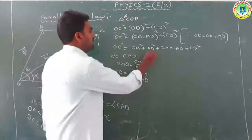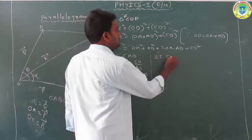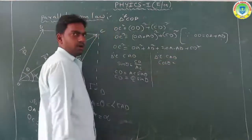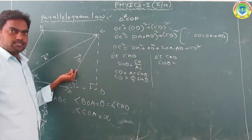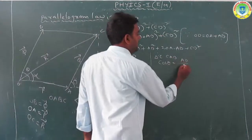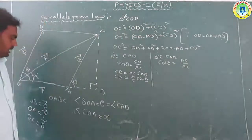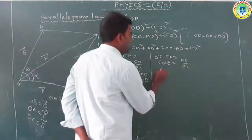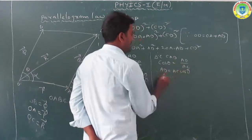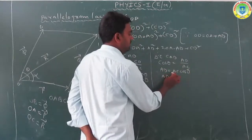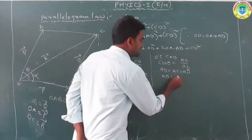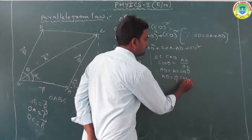From the same triangle CAD, by using cos theta: cos theta = adjacent side / hypotenuse = AD / AC. So AD = AC·cos theta. Since AC = Q, AD = Q·cos theta.